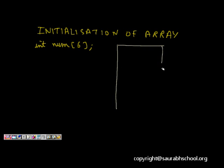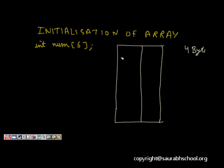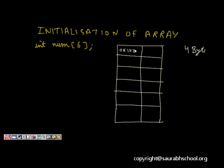Let's see how the array looks in memory. We assume that an integer is 4 bytes, and in one memory location 1 byte is stored. So the memory locations would be something like 0x100, then 0x104, and so on.